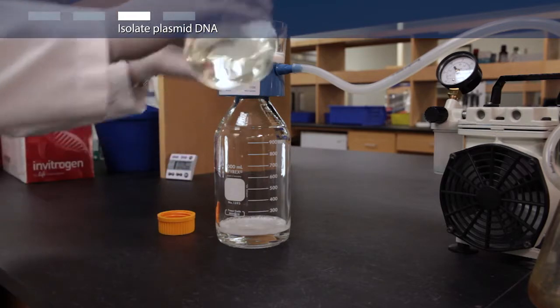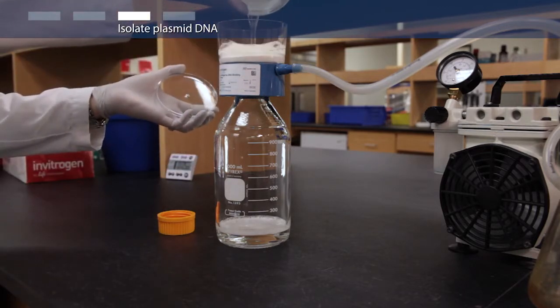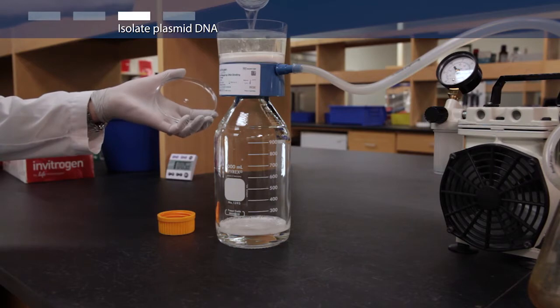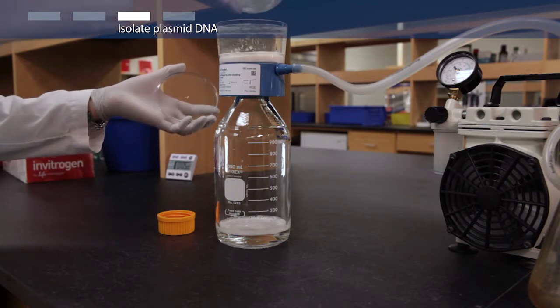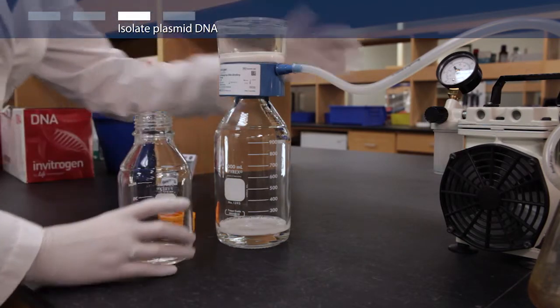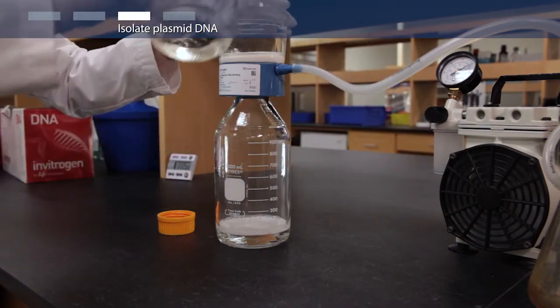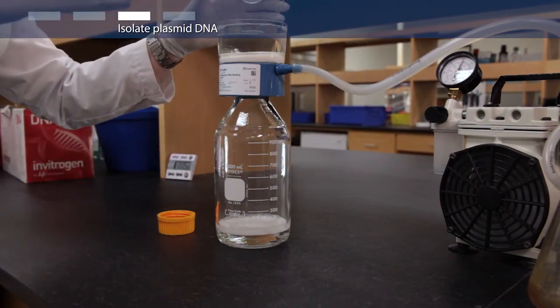Load the clarified lysate onto the equilibrated binding cartridge. Apply vacuum and drain solution. Your plasmid DNA is now on the column.